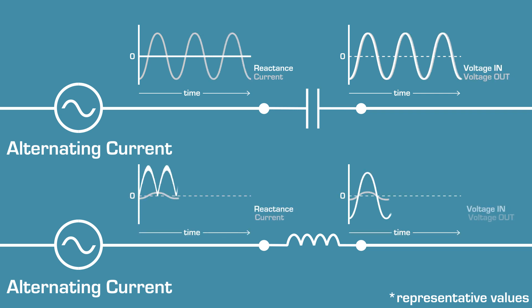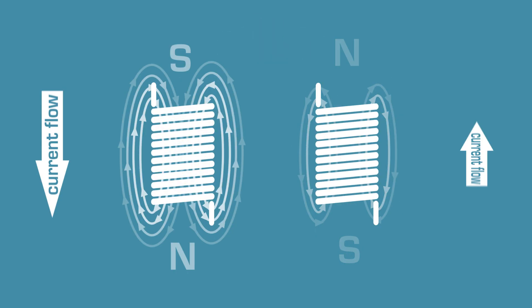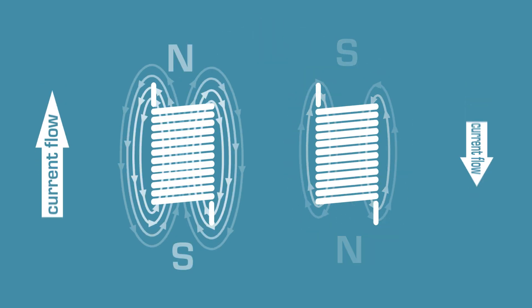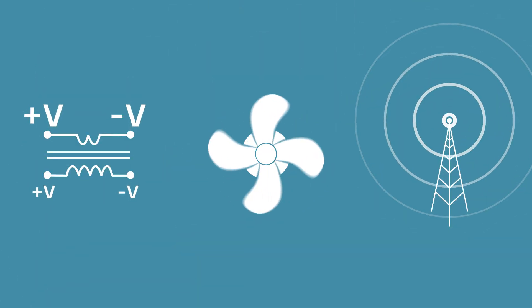On the other hand, higher frequencies make it harder for AC to flow through inductors, as the inductor's magnetic field has to continually change directions with the current. Fortunately, a changing magnetic field also induces a current in nearby wires, allowing inductors to transfer power through magnetism and making things like transformers, motors, and radio possible.